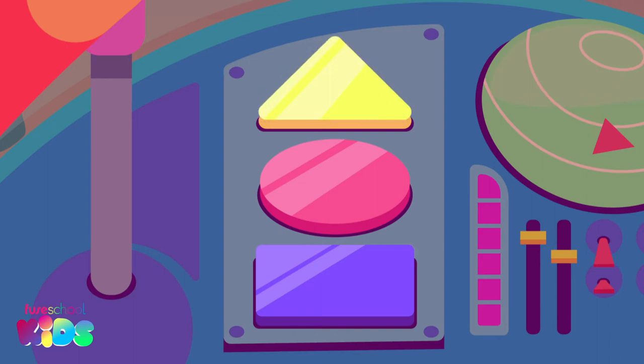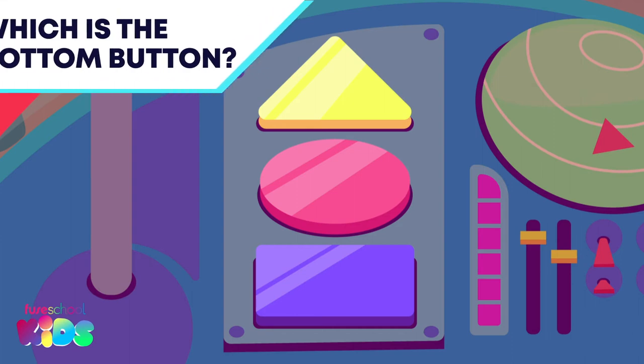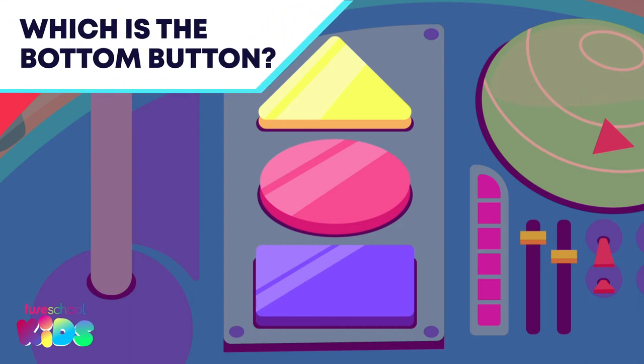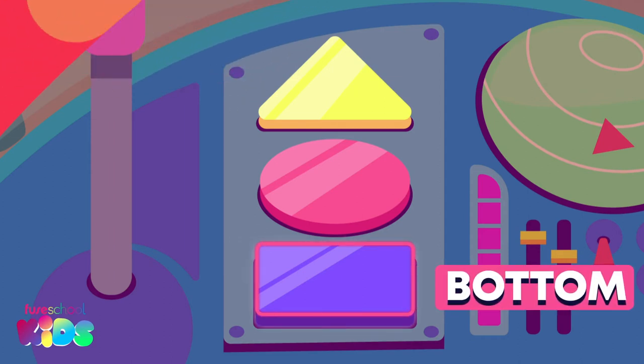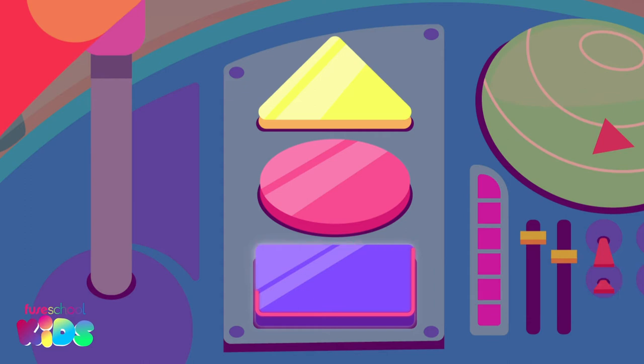The bottom button turns the rocket off. Which button is at the bottom? Did you say this one? Great work! To make us blast off, we have to push the middle button.